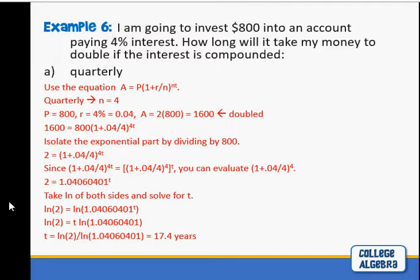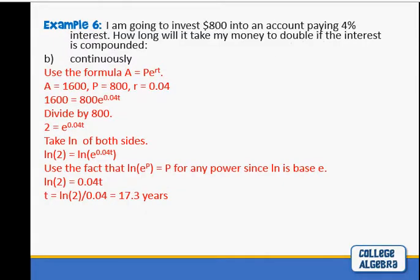We're going to conclude with continuous compound interest. The formula is actually easier because it has e in it and we have natural log. When it's compounded continuously, if you take the limit as n goes to infinity, you wind up with A equals Pe^rt. E is the constant 2.7-something, the irrational number on your calculator. P is the $800. We're just going to change and do it continuously.